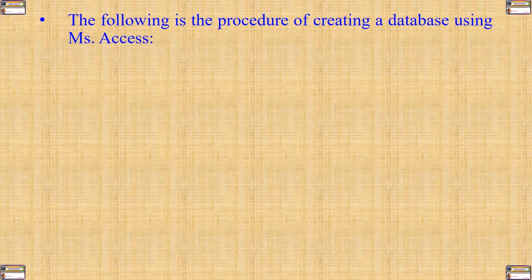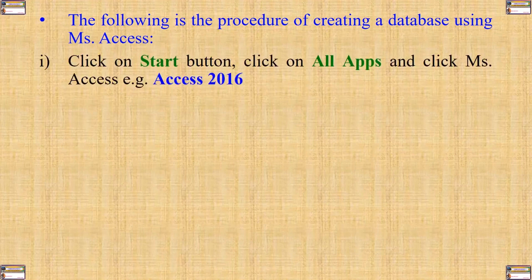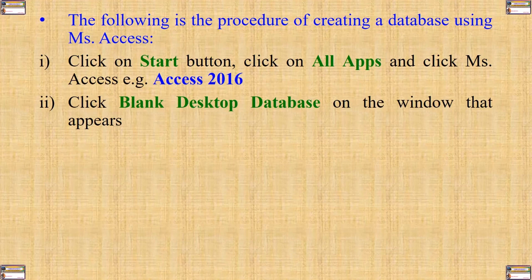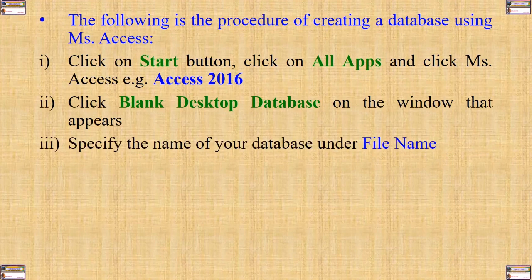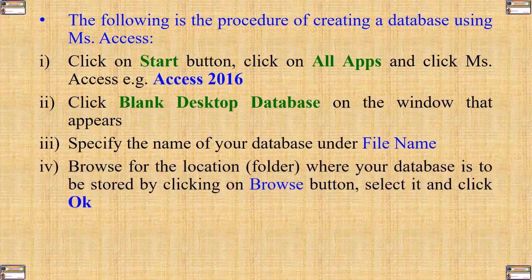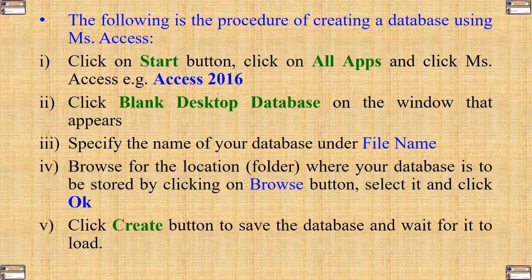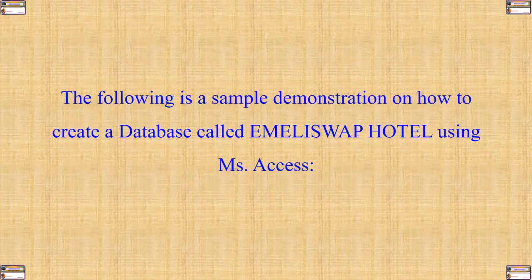The following is a procedure for creating a database using Microsoft Access. Number one: click on the Start button, then click on All Apps and select MS Access — for example, Access 2016. Then click Blank Desktop Database on the window that appears. Number three: specify the name of your database and the file name. Number four: browse for the location or folder where your database is to be installed by clicking the Browse button. Select it and click OK. Number five: click the Create button to save the database and wait for it to load.